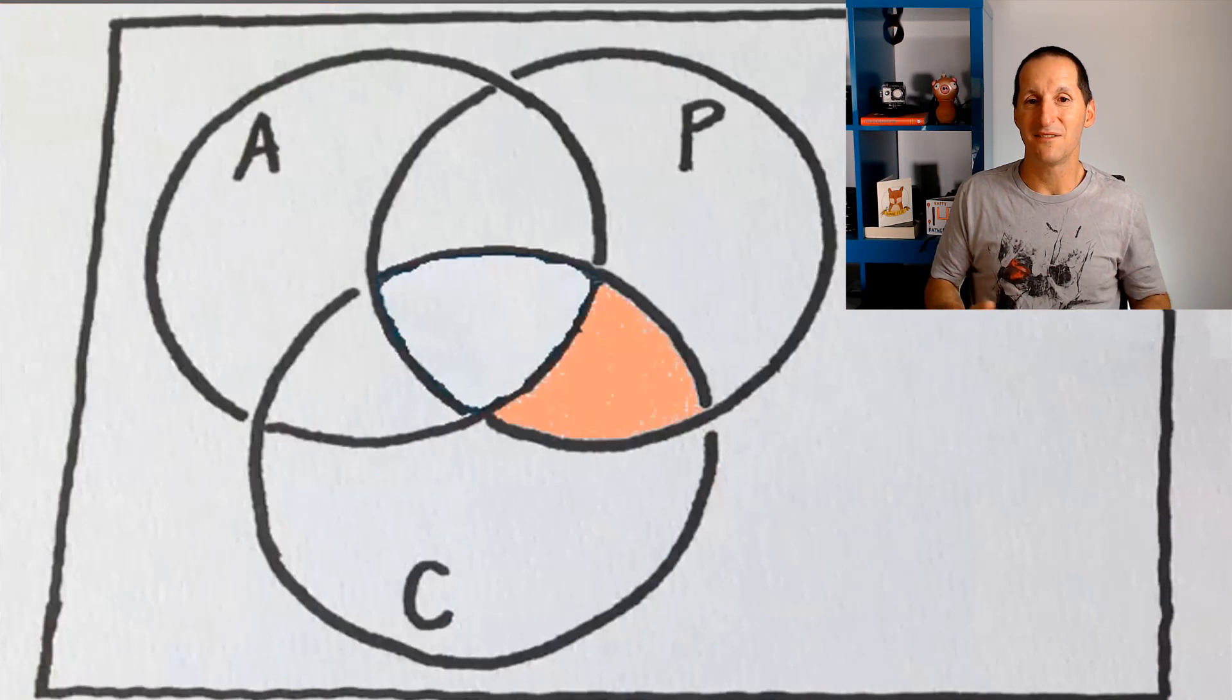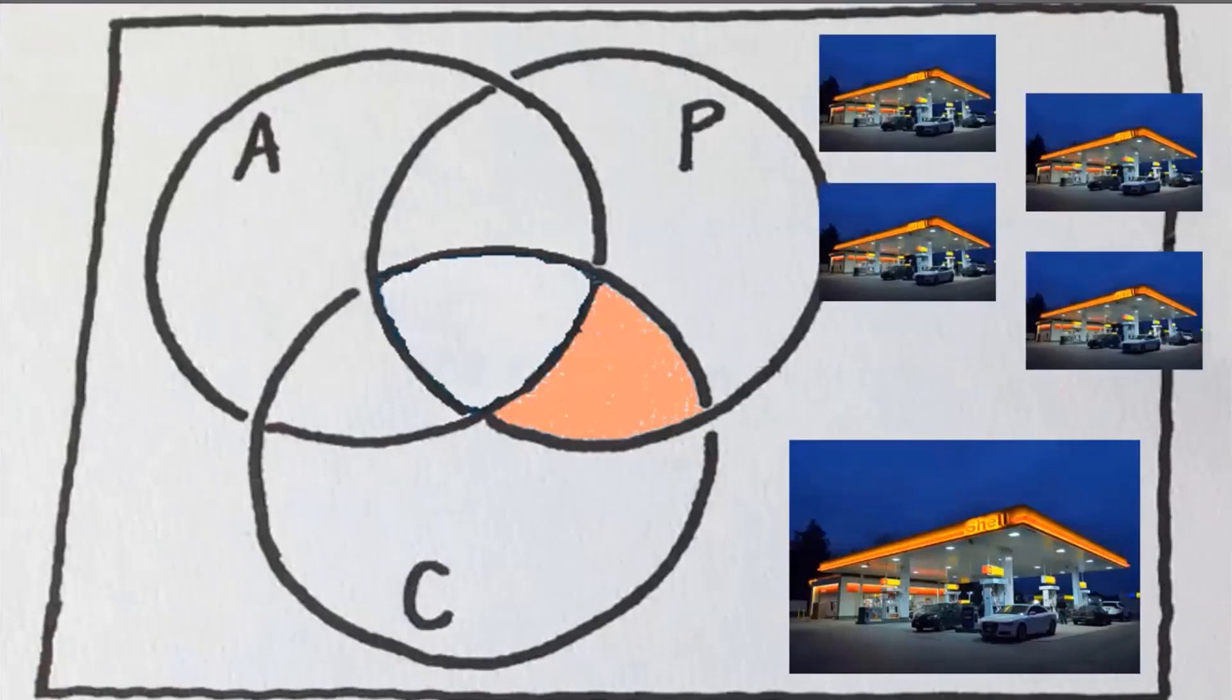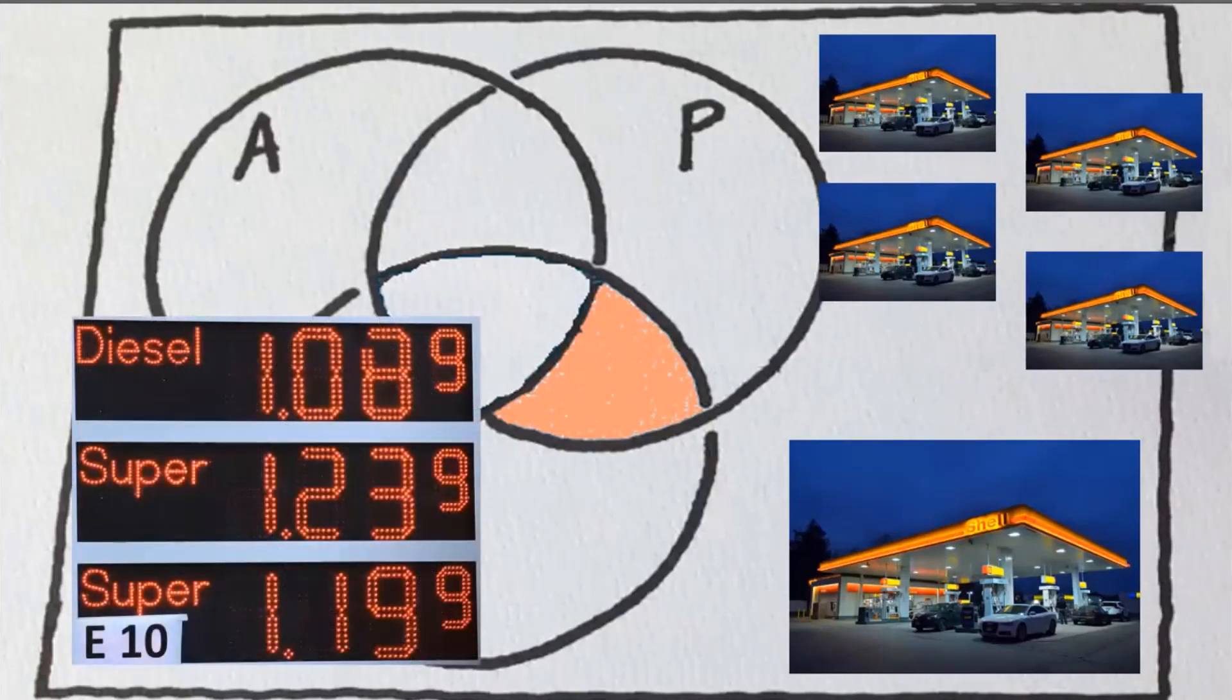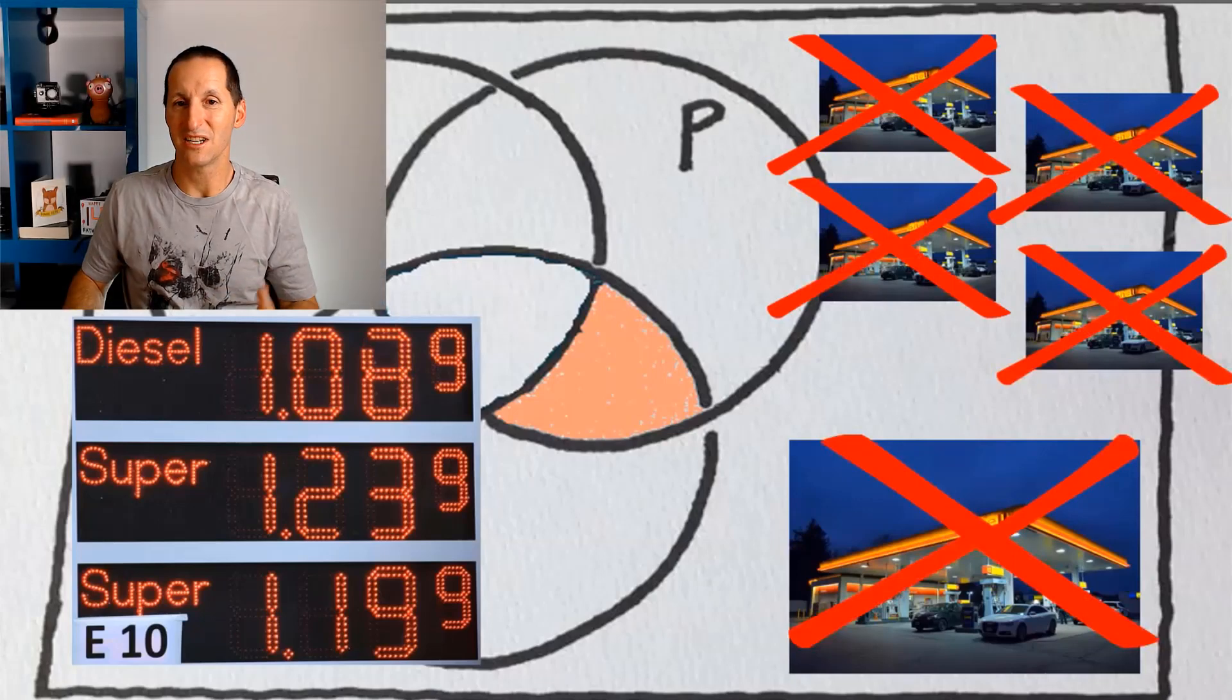So the first option we have is you can have partitions and consistency. So in terms of a metaphor, here's my petrol station. If I have partitions, that means I can have lots of petrol stations. If I want every single petrol station to always show the same price, no matter where it is, which means consistency, I want partitioning and consistency. I want every petrol station to show diesel being 108.9. What it means is if I can't get in touch with one of those petrol stations, they're not picking up the phone. What do I have to do? I have to turn all my petrol stations off. That's what's meant by partition and consistency.